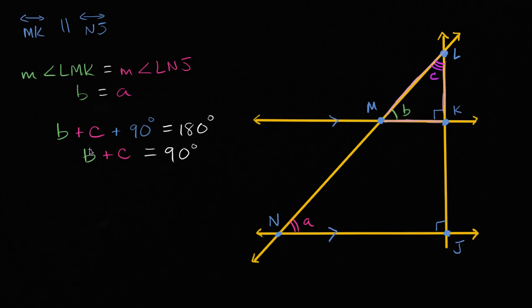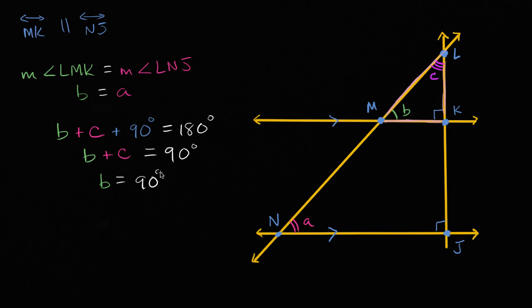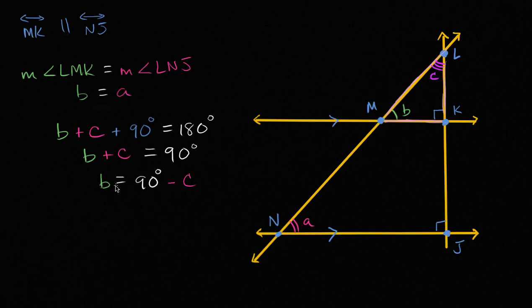If we want to solve explicitly for b, we can subtract c from both sides, and we get b is equal to 90 degrees minus c. So that's one way of expressing b.